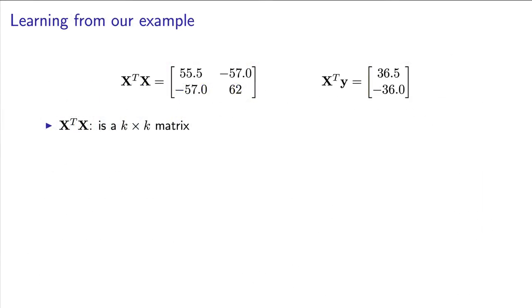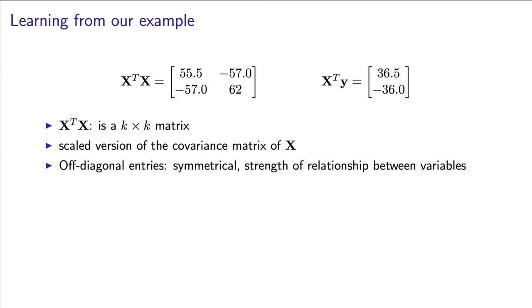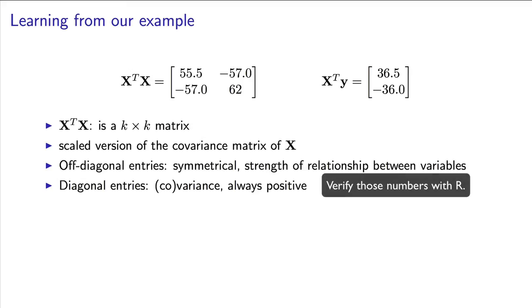I want to point out that X transpose X will always be a K by K matrix, K being the number of variables in our model. In this case, K is 2. It is going to be an important point later on that the entries in X transpose X represent the covariance of the X variables with each other. For example, the entry in the 1, 2 position in this matrix is the same as the entry in the 2, 1 position. That's because the covariance of variable X1 with variable X2 is the same as the covariance of variable X2 with variable X1. You'll recall that from an earlier video, and that that should be the same number. The entries on the diagonal are also covariances, but they're covariances of the variables with themself, so we simply call that variance. In this case, the 55.5 over here is directly proportional to the variance of the X1 variable. The 62 is proportional to the variance of the X2 variable.